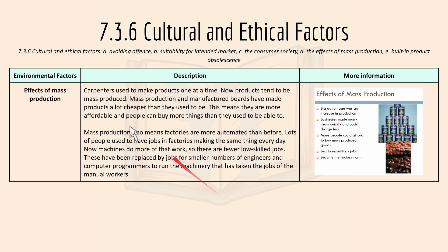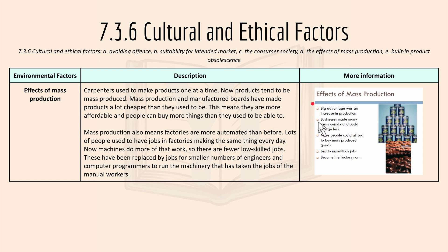The fourth point is the effect of mass production. Carpenters used to make products one at a time, but now products tend to be mass produced. Mass production and manufactured boards have made products a lot cheaper than they used to be. Factories are now more automated, and many people who used to work in factories making the same thing every day have been replaced by machines, which can perform faster and more accurately.